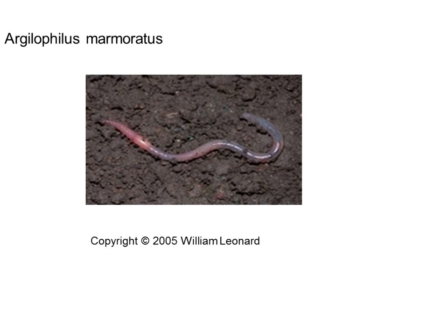Our native earthworm is Argophyllus marmorotatus. Generally you can find natives in undisturbed native habitats — they hold their own in undisturbed grassland and oak savannas found in the Bay Area. They are less metabolically active and don't enrich the soil quite as much as our exotic earthworms brought in from Europe, because our native soils tend to be drier and leaner than the rich farmlands of Europe.